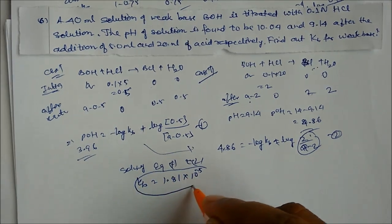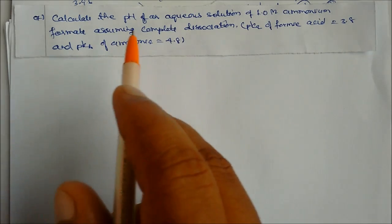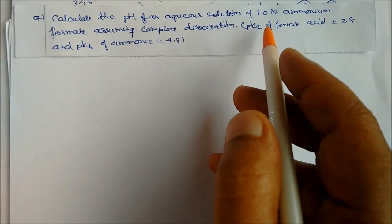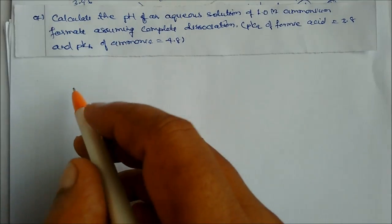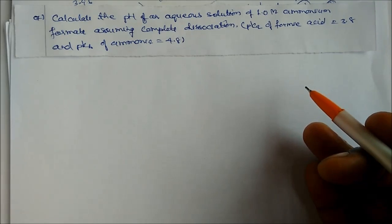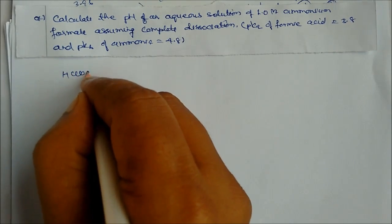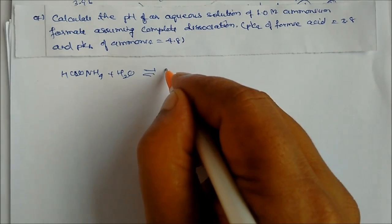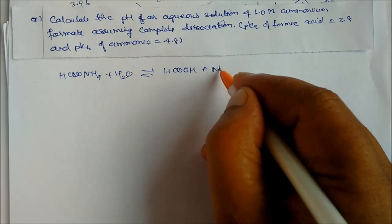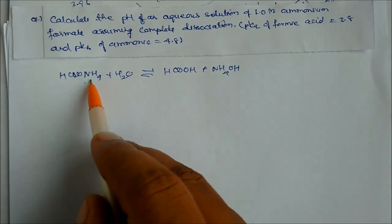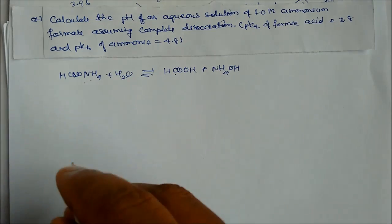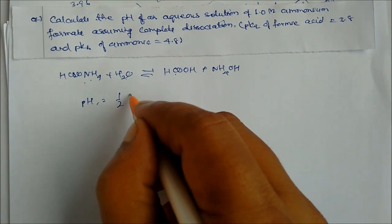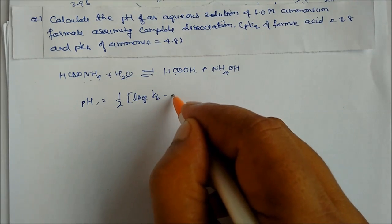Final problem: calculate the pH of an aqueous solution of 1 molar ammonium formate, assuming complete dissociation. pKa of formic acid and pKb of ammonia are given. Ammonium formate reacts with water to produce formic acid and ammonium hydroxide — a salt of weak acid and weak base.